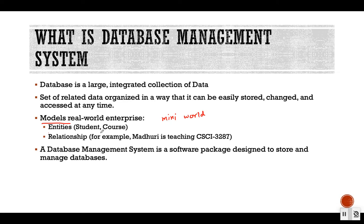We can model a mini world using concepts called entities — the objects and components of that world, for example students and courses. Each of these components, or entities, are related with each other. For example, Madhuri is teaching some course: Madhuri is an entity of instructor type and the course is another type of entity. In a mini world we have different types of components and different types of relationships between them.